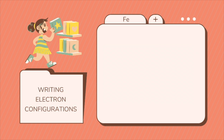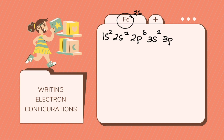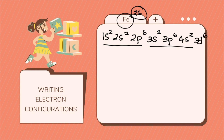When writing electron configuration, the first step is to determine how many electrons are in the atom. For example, iron has an atomic number of 26, therefore there are 26 electrons. We arrange the energy levels by sublevel according to increasing energy. So for iron: 1s², 2s², 2p⁶, 3s², 3p⁶, 4s² — that is 20 electrons — and since we only need 26 total, then we have 3d⁶. The sum of the superscripts equals the atomic number of iron.